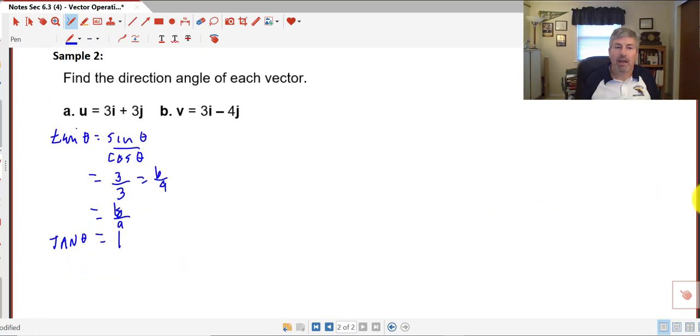And then for b, this one's going to be a little more challenging. We want to find our tangent of theta, which again, sine over cosine. Some of you guys are probably skipping right to b over a. Our sine is negative 4, and our cosine is 3, or our b over our a.